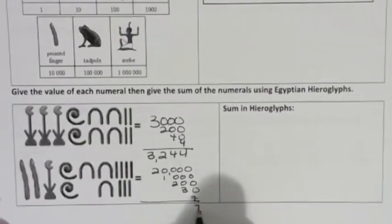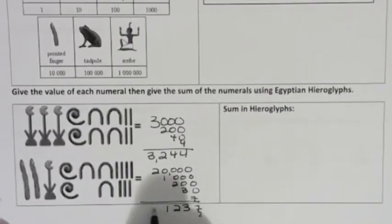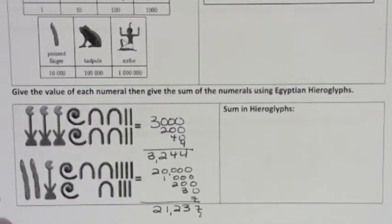And so we have seven, three, two, one, two. 21,237 is the total of that number. What does that sum look like in hieroglyphs?